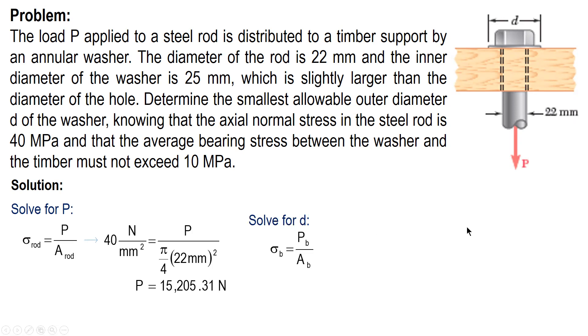So again, we solve for D. Let's draw the bearing area or contact area between the washer and the timber support. We have this bearing area. The outer diameter is D, and the inner diameter is 25, given. Inner diameter of the washer is 25.